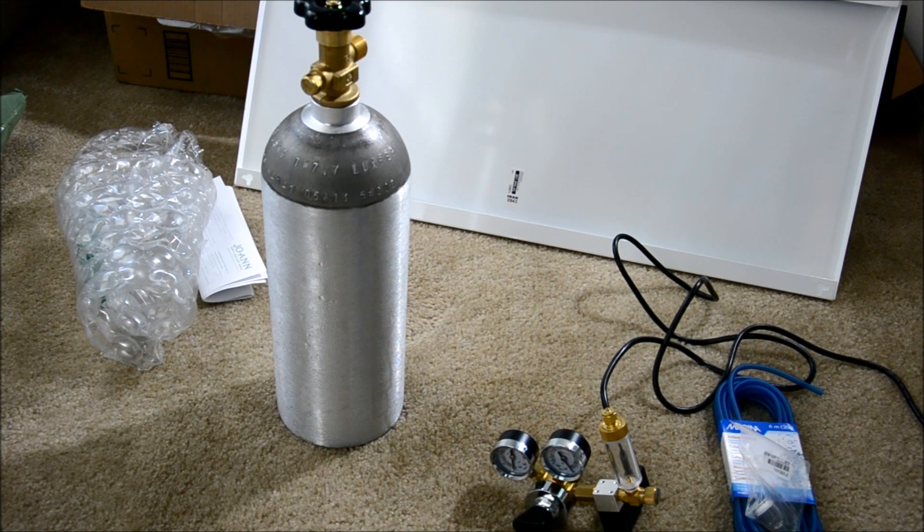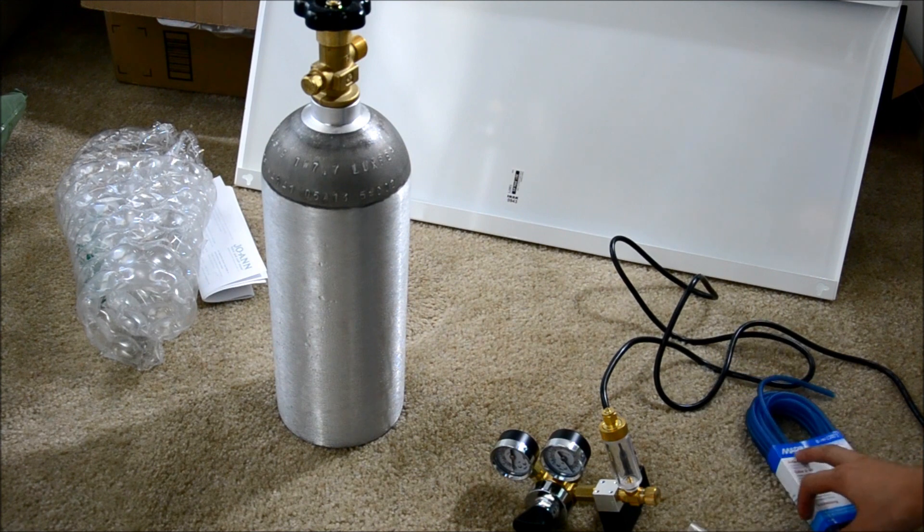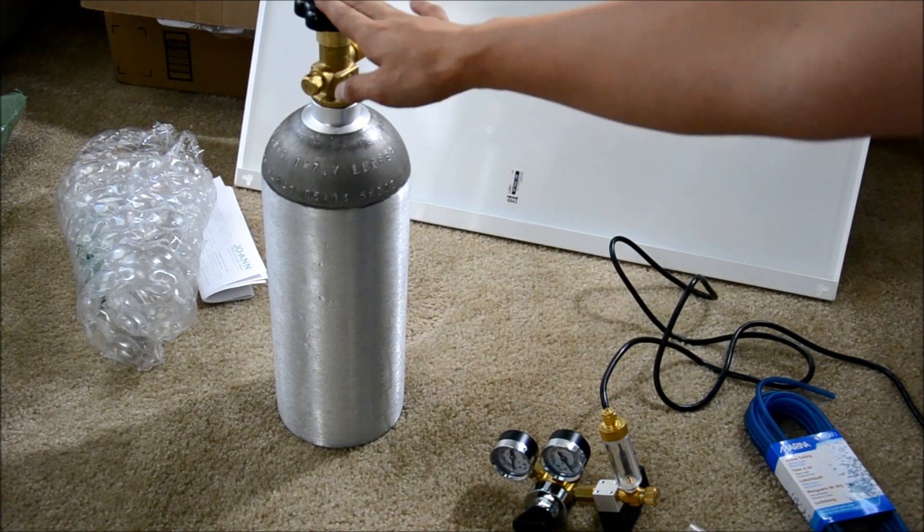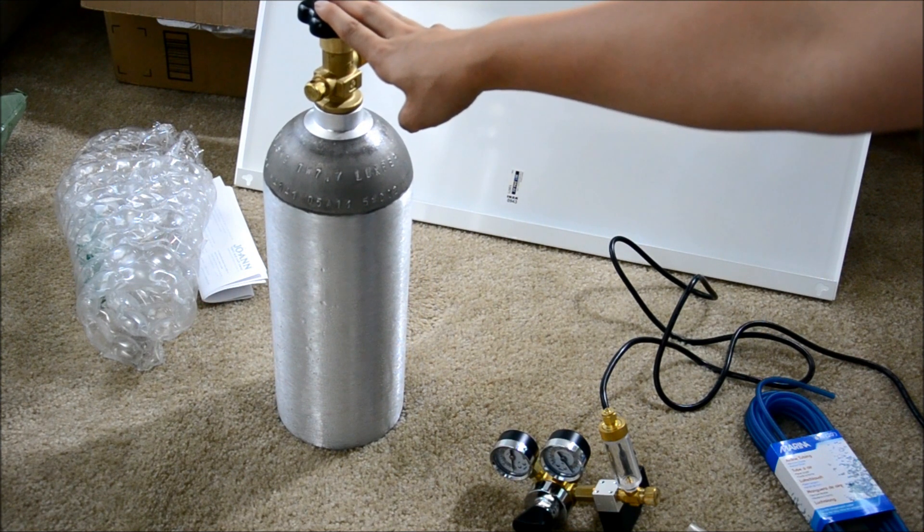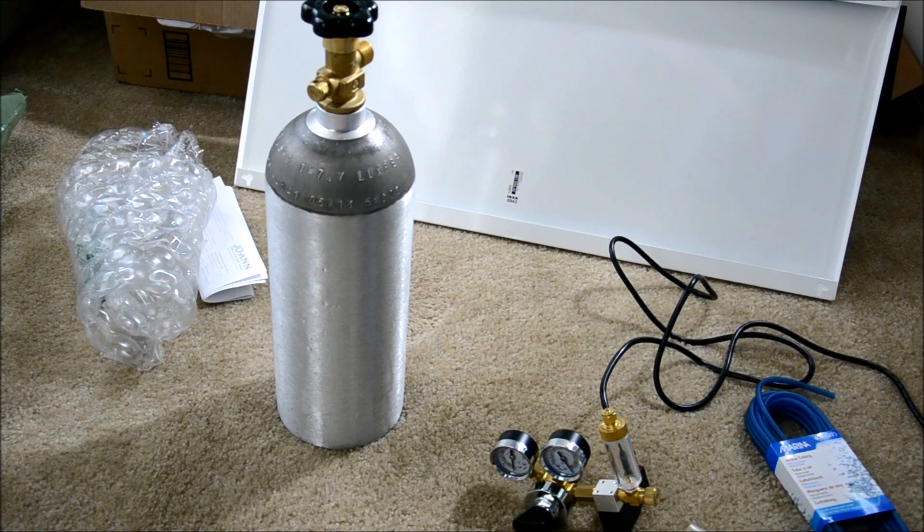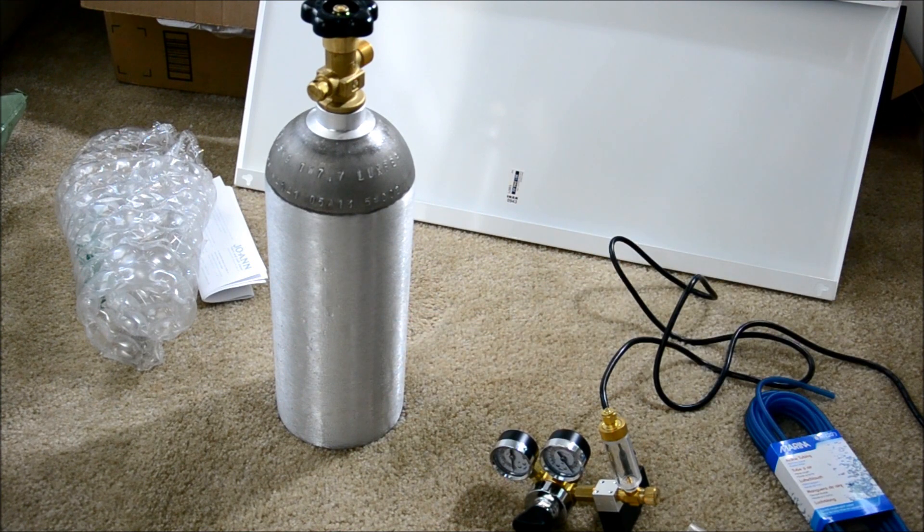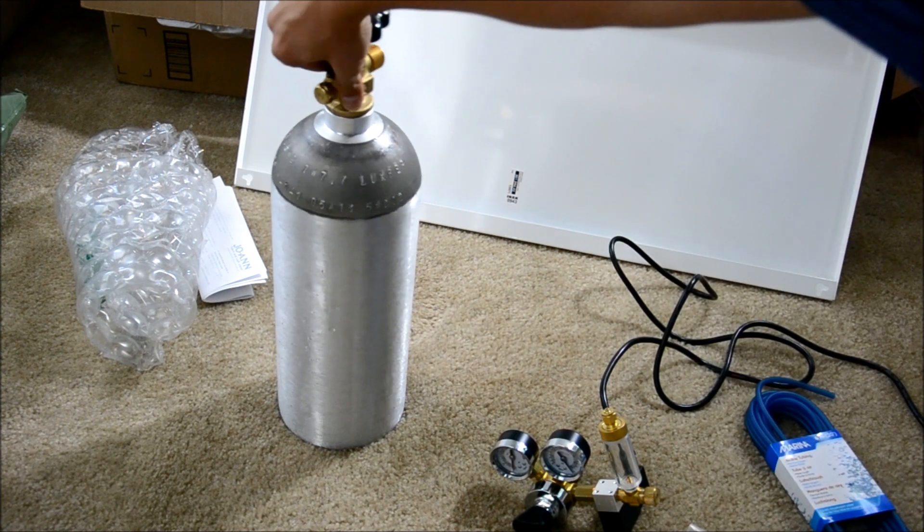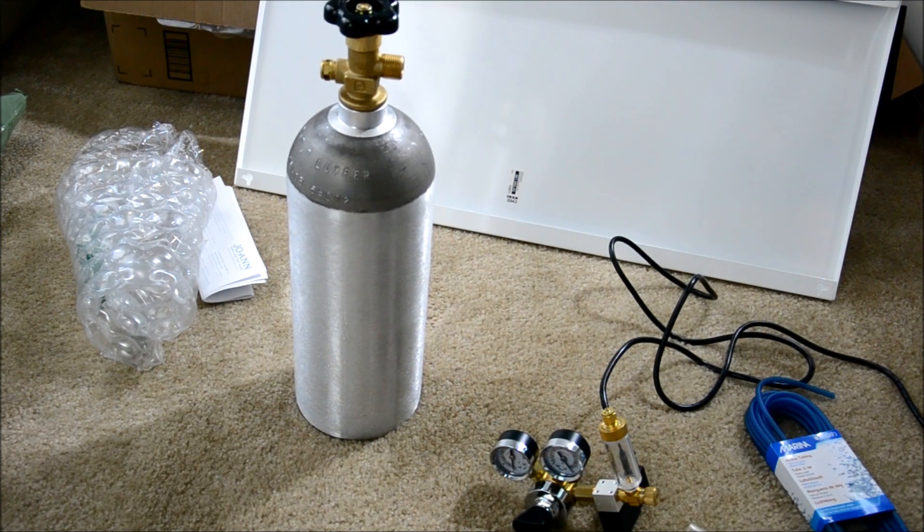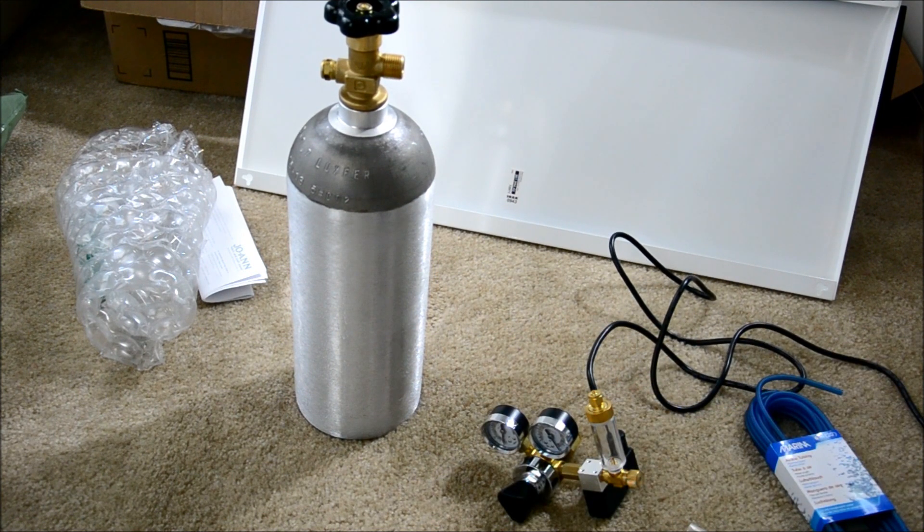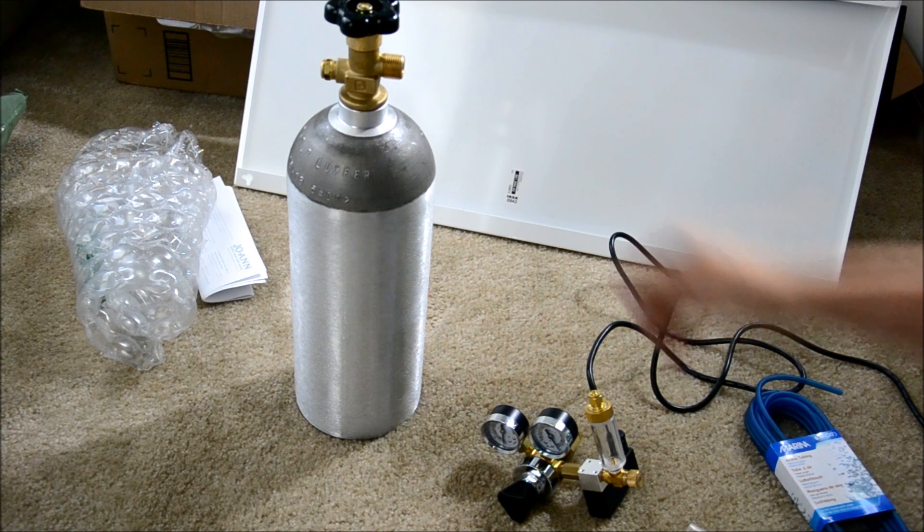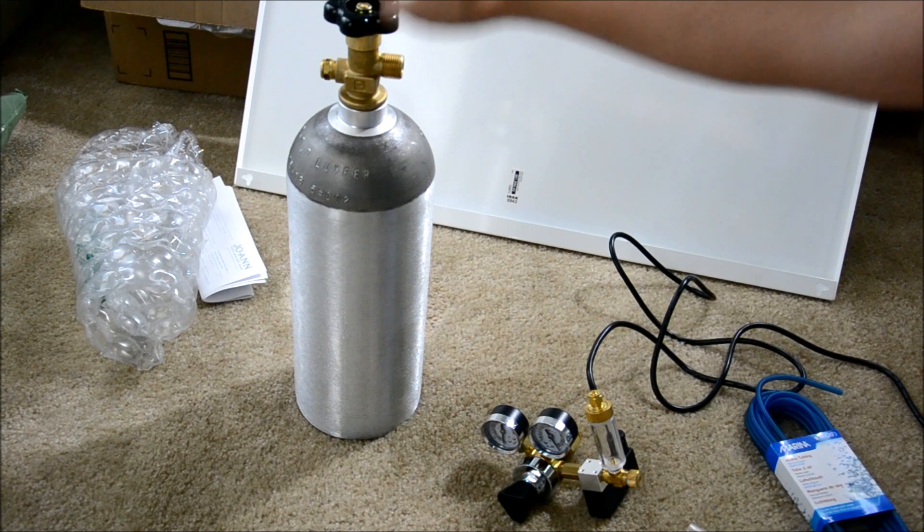So a couple things that you'll need to set up your CO2 for your tank is obviously a CO2 tank. This is a 5 pound tank. You can get a 10 pound which is a little bit taller. You can get paintball sized ones which is little small ones. The only thing with the paintball is the adapter for that, it's going to be a little different. So just take that into consideration. You basically just have to match the regulator to the correct sizing of your tank that you're going to buy. So this is a 5 pound tank.